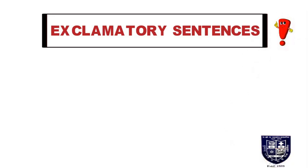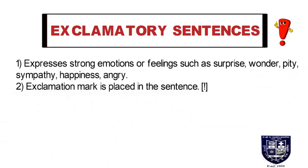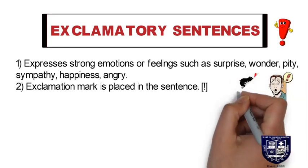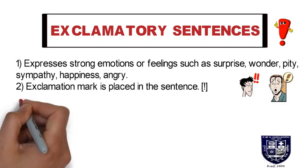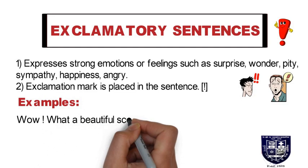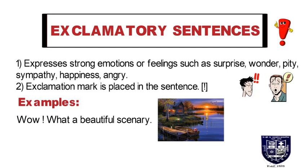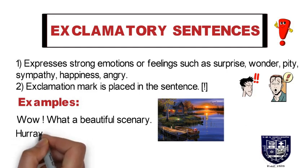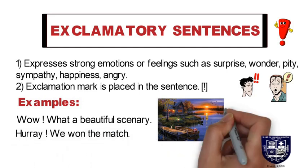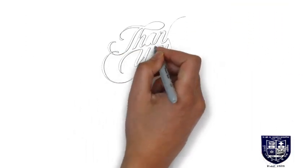And finally, the exclamatory sentence. An exclamatory sentence expresses strong emotions and feelings like surprise, sympathy, and happiness, and it always ends with an exclamation mark. For example: 'Wow, what a beautiful scenery!' — an expression of surprise or wonder. 'Hooray, we won the match!' — an expression of happiness.